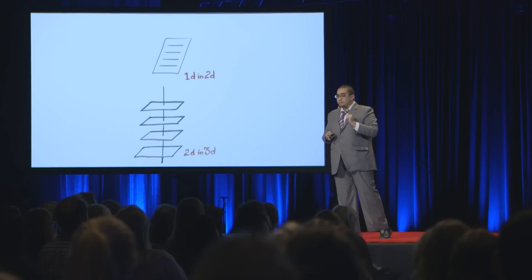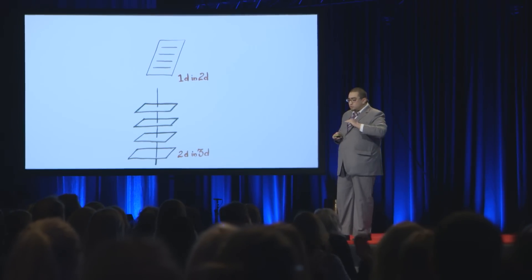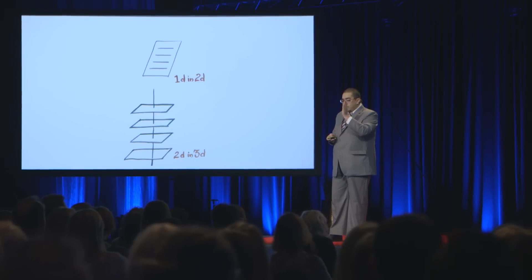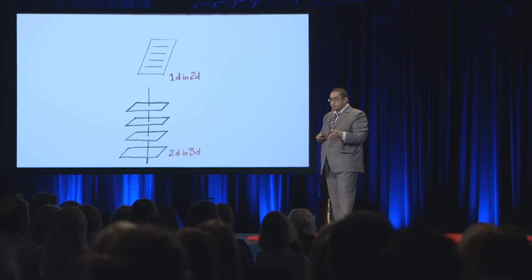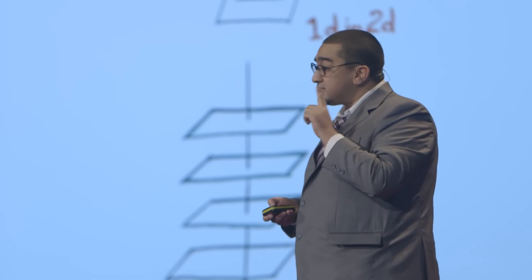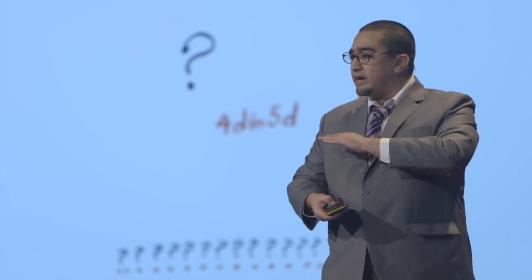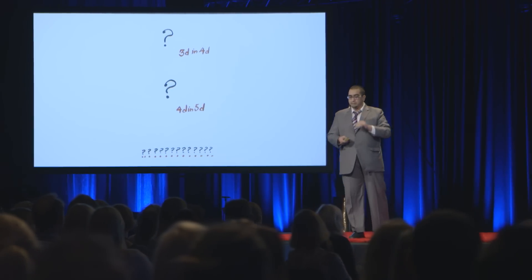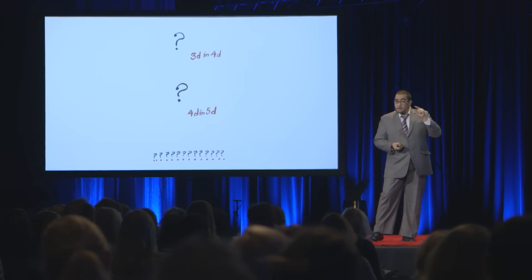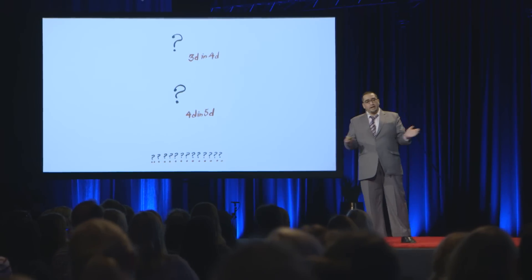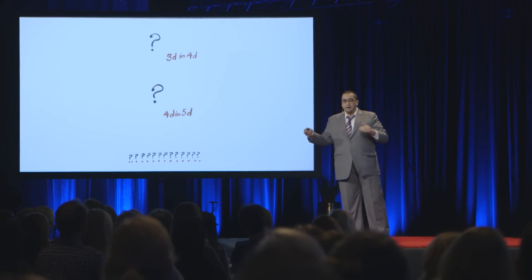Something very interesting about extra dimensions. You can draw lots of parallel lines on a sheet of paper. So you can have lots of one-dimensional objects in a two-dimensional object, parallel to each other. You can have lots of two-dimensional objects parallel to each other along the height — parallel to each other along a third dimension. This becomes really important when we talk of parallel universes. By analogy, you can have lots of three-dimensional objects parallel to each other in a fourth dimension, four-dimensional objects parallel along a fifth dimension, and so on. You can have any object parallel to each other in a higher dimension.